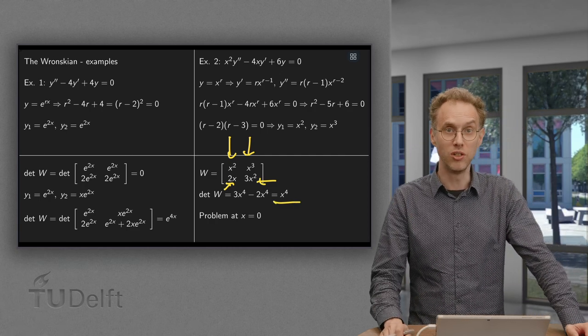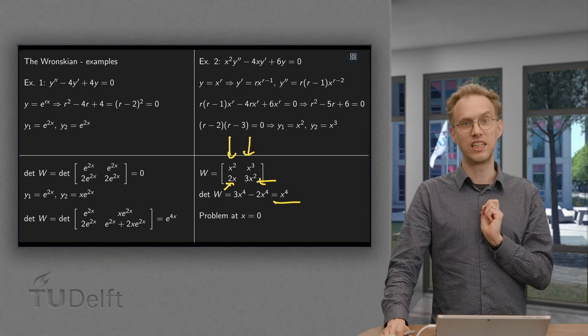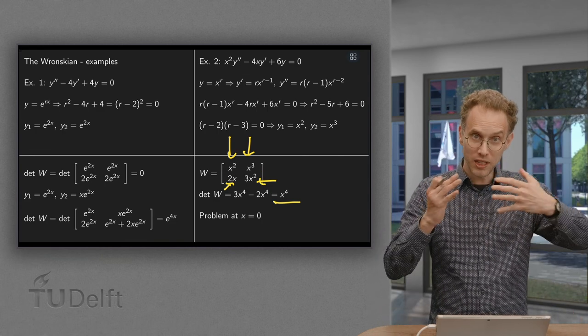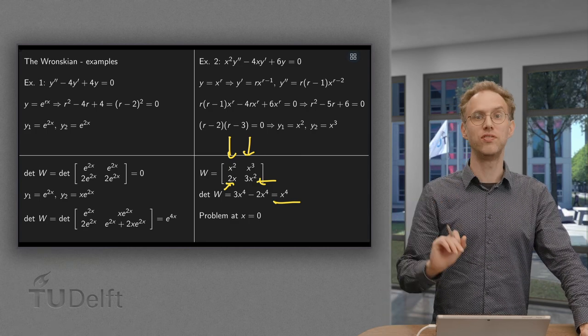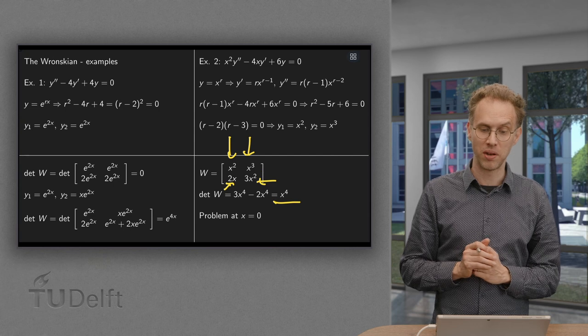Which is fine, which is not zero unless x = 0. So here we do indeed have two independent solutions as long as we stay away from x = 0.